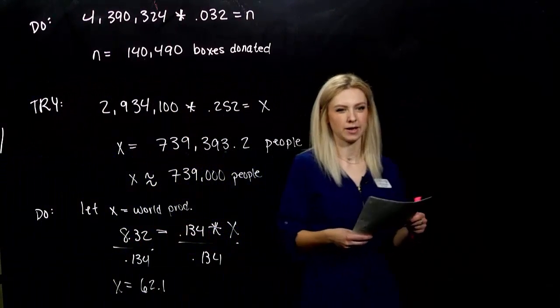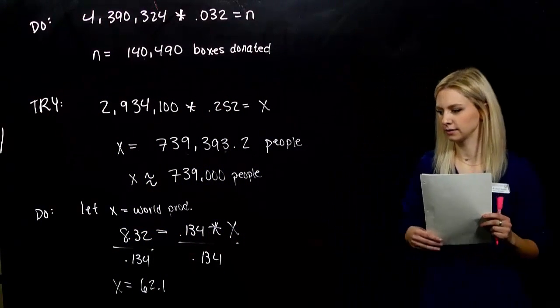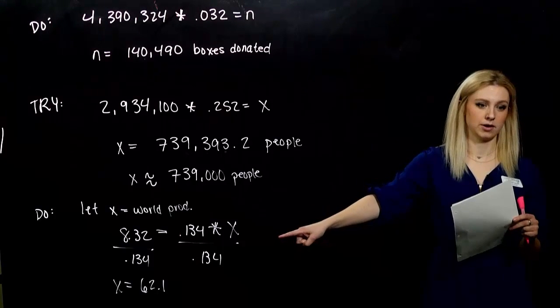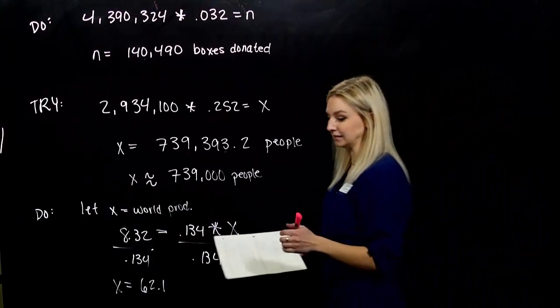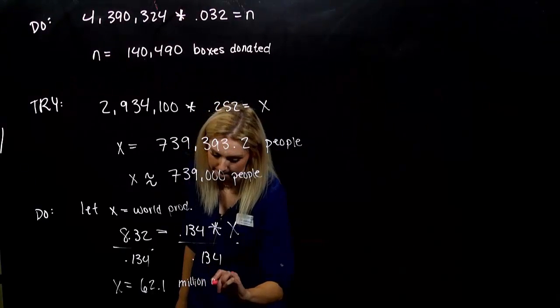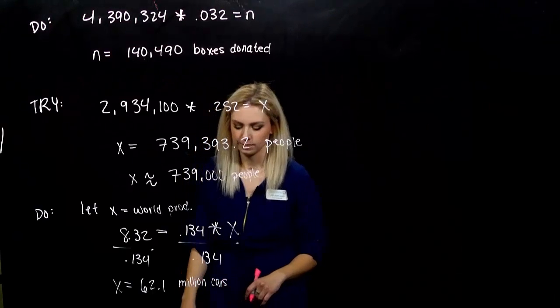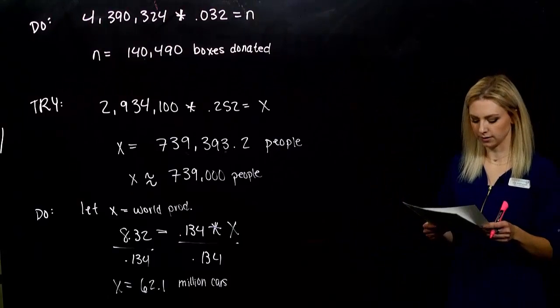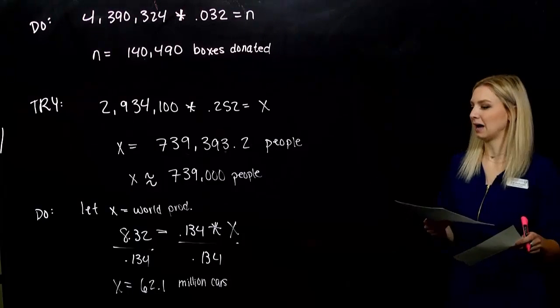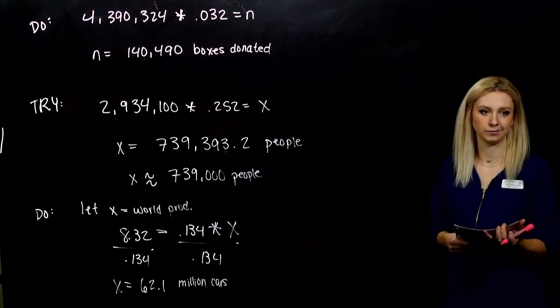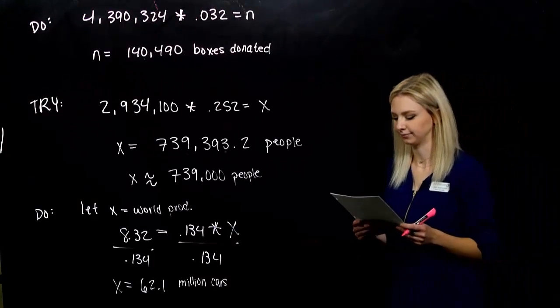And we get X exactly equal to 62.1. But, what kind of units do we have on there? We're talking about cars. Are we talking about 62 cars? 62,000 cars? We're talking about millions of cars. So, 62.1 million cars were produced worldwide in 2010. That's a lot. I would think the U.S. would contribute more, but, hey, outsourcing.